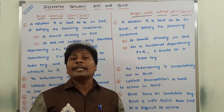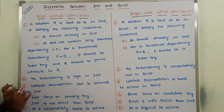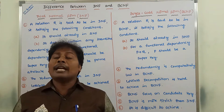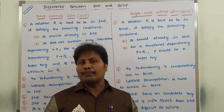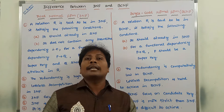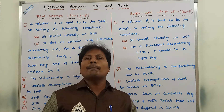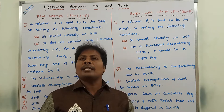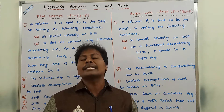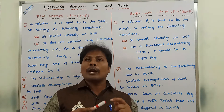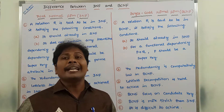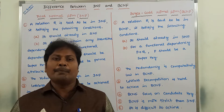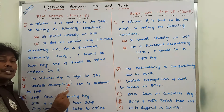Lossless decomposition can be achieved in 3NF, whereas lossless decomposition is very harder to achieve in BCNF. There are two types of decompositions: lossless decomposition and lossy decomposition. Decomposition is dividing a relation into two or more relations. When the information lost is very less, it is a lossless decomposition. When more information is lost during decomposition, it is called lossy decomposition.